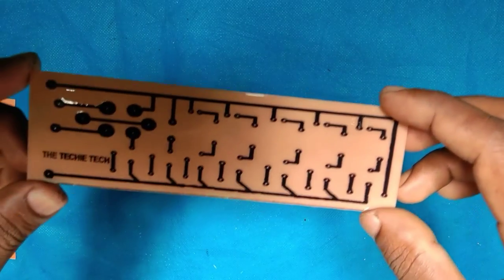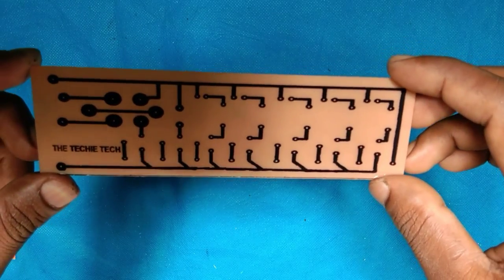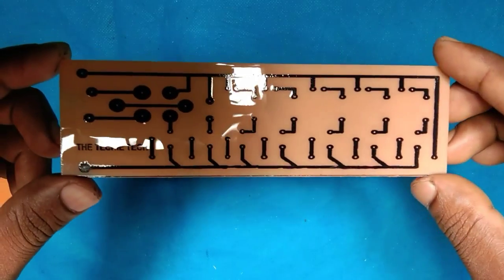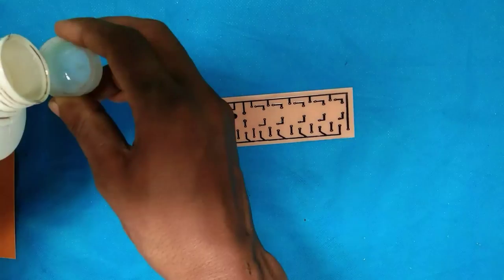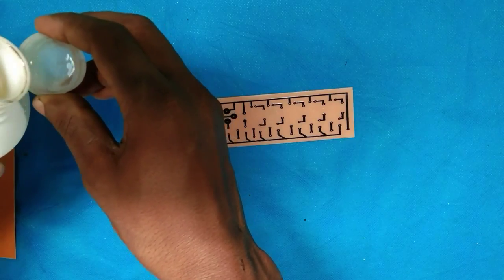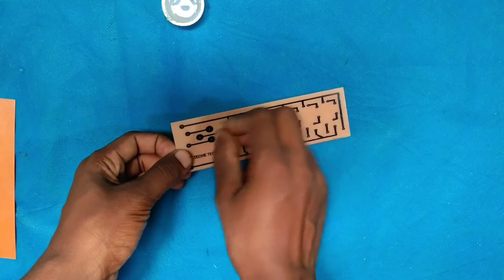The copper is dissolved in solution, but the toner is still printed on the board. To remove it, we will use circuit board cleaner, also known as thinner. You can also use nail polish remover. Clean the circuit board with help of cotton or cotton cloth.